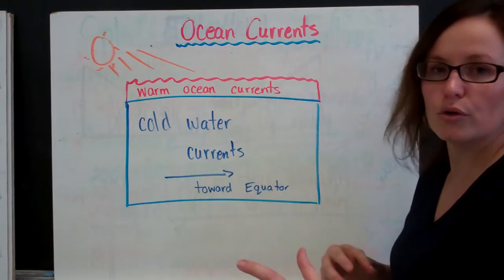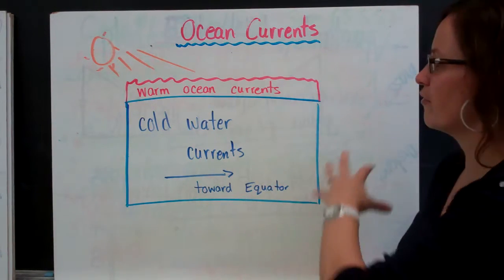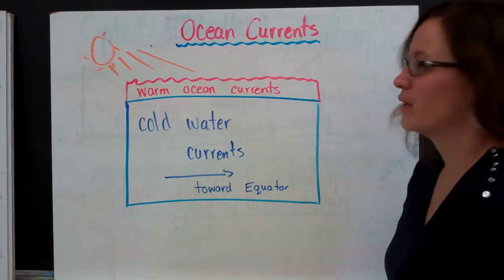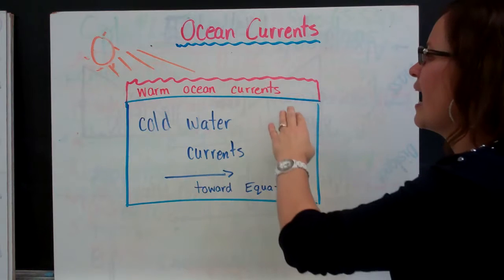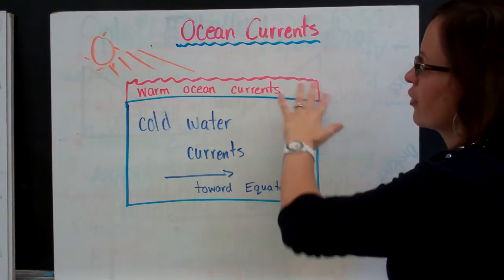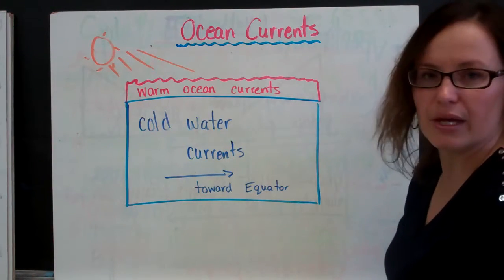And as these currents move, they affect the climate of the areas around them. Now, cold water currents are generally always floating towards the equator and warm water currents generally are floating away from the equator. So those are your global climate factors.